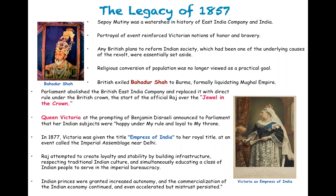This marked a turning point in the history of the East India Company, because now the British crown would assume control over the subcontinent. This marks the beginning of the true British Raj in India, which would last for the next 100 years as the British crown presided over the destinies of more than 215 million people, determining their economic, social, and political life.